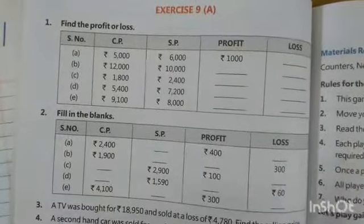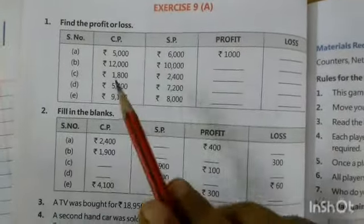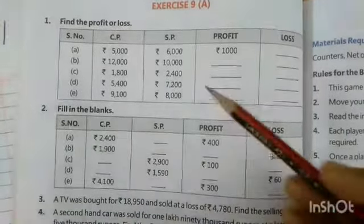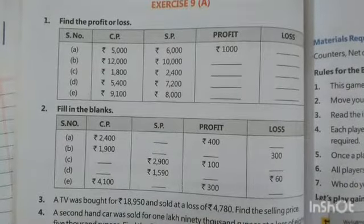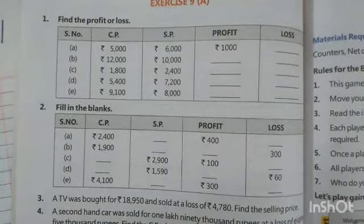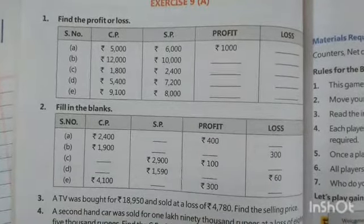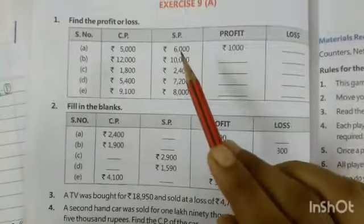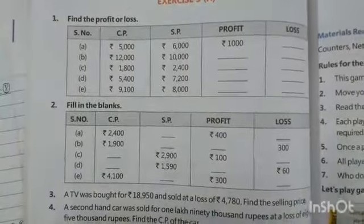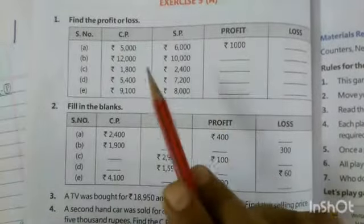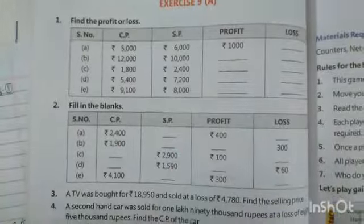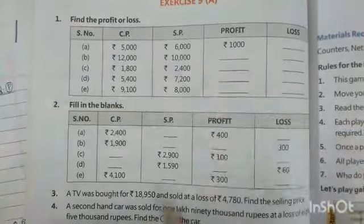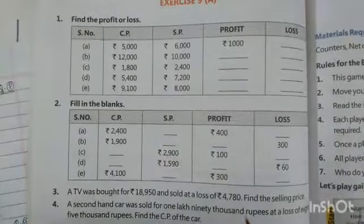Find the profit or loss. Cost price and sell price are already given. Here cost price is 5,000 and sell price is 6,000. So 6,000 is greater than 5,000, that is the cost price. So profit is equal to 1,000.